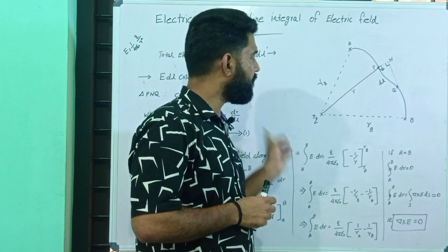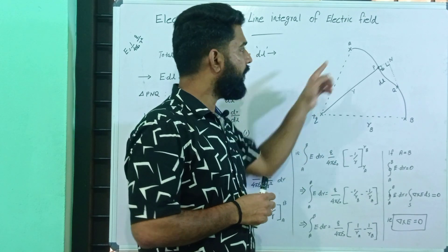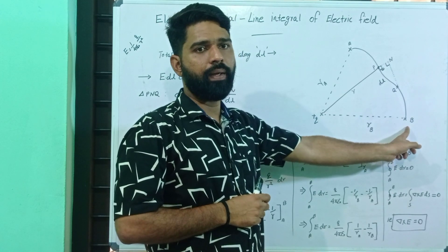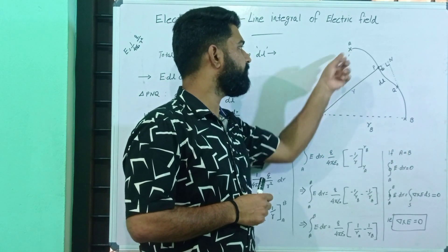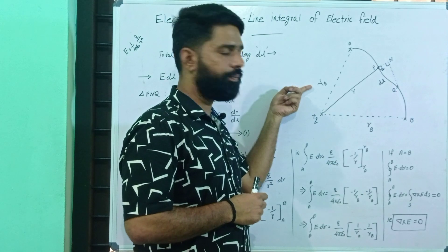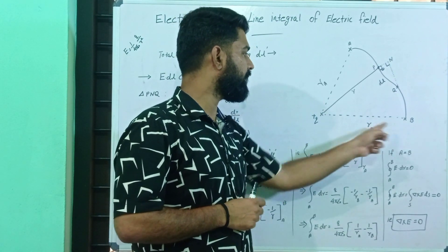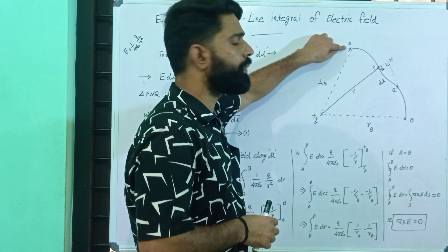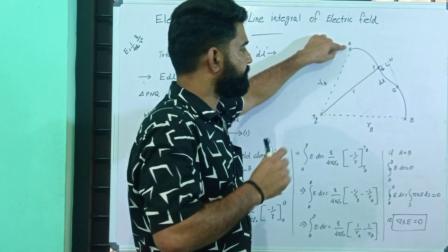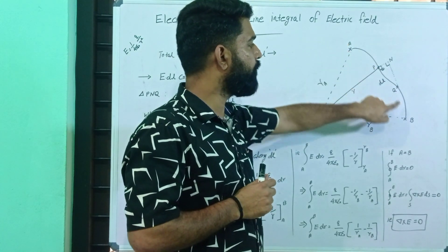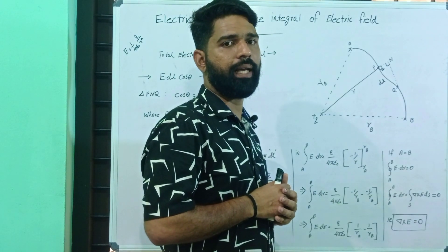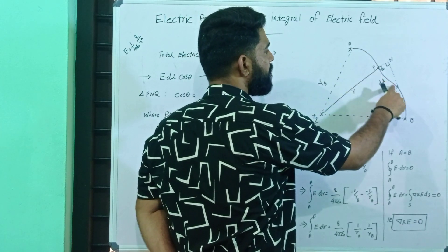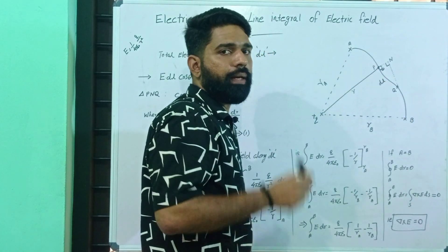That charge is in the electric field lines. In that region, we consider A as a point and B as a point. R_A is the position vector of A, and R_B is the position vector of B. Now we take a test charge at point A and move it to point B.